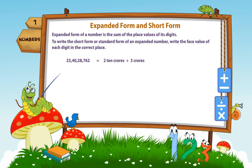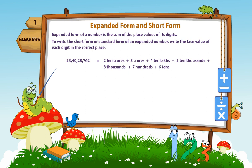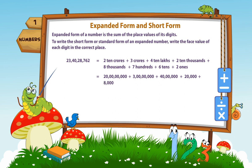...plus 3 crores plus 4 ten lakhs plus 2 ten thousands plus 8 thousands plus 7 hundreds plus 6 tens plus 2 ones, equal to 20 crores plus 3 crores plus 40 lakhs plus 20,000 plus 8,000 plus 700 plus 60 plus 2.